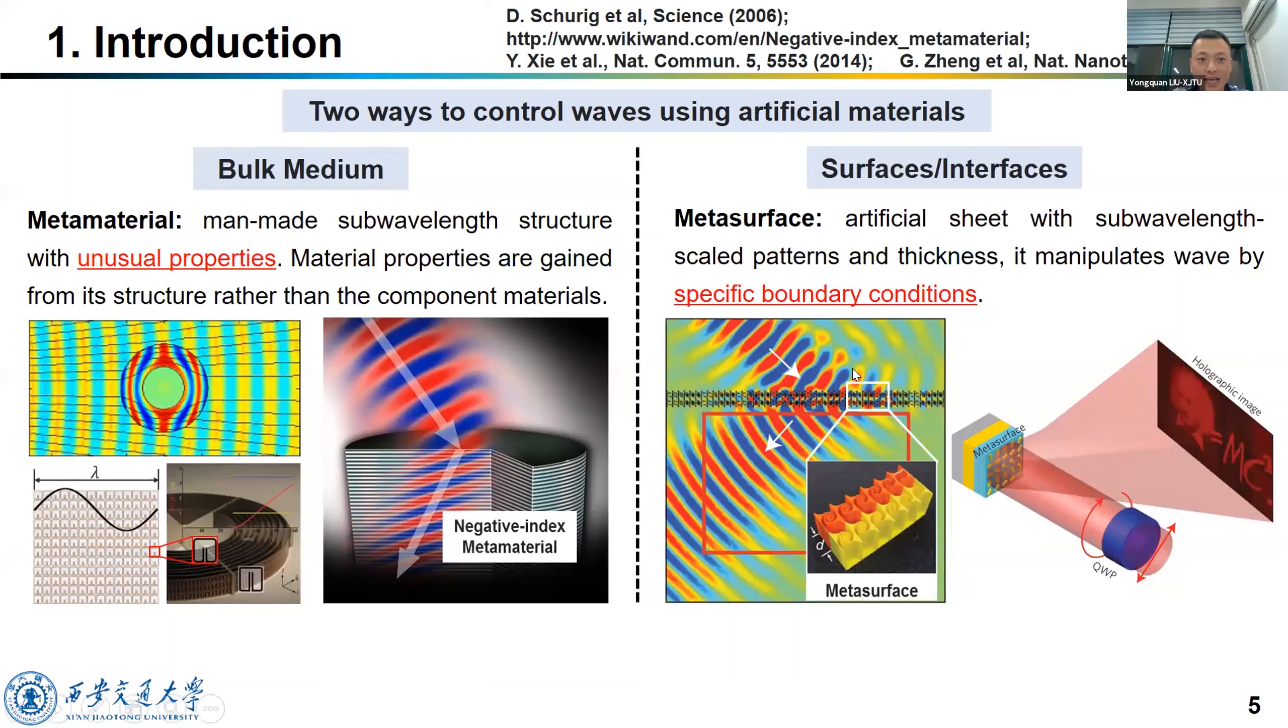And the second method is just using a layer of artificial surface or interface with specific boundary or interface conditions. We call it a metasurface. For example, the metasurface can let the wave front change abruptly to achieve negative reflection. And the metasurface was also used to design holographic devices and so on.